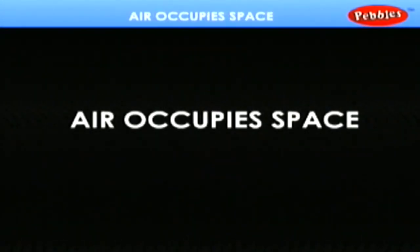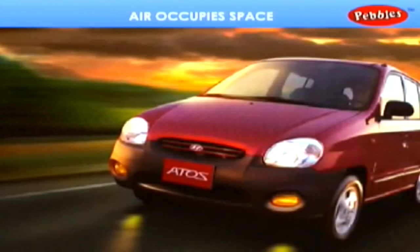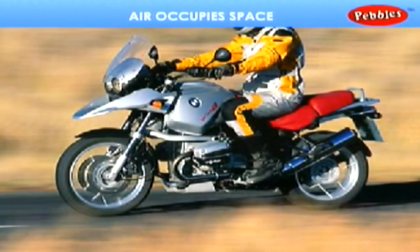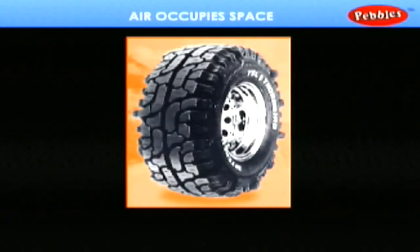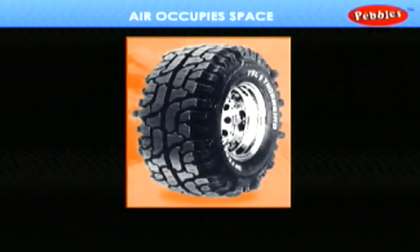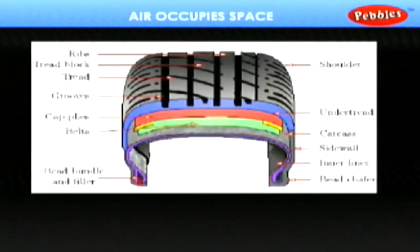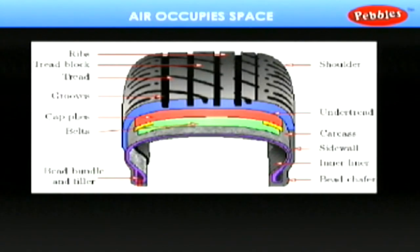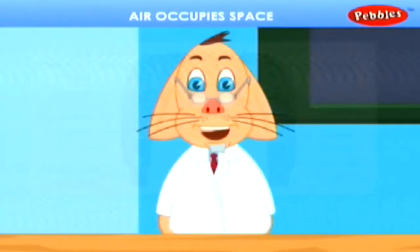Air occupies space. All the means of transport we watch in our daily life balance on the air pressure of the tubes present in the tire. Once the tire gets punctured, the vehicle loses its balance since the air escapes due to the puncture in the tube. Let us discuss the above principle in the following experiment.